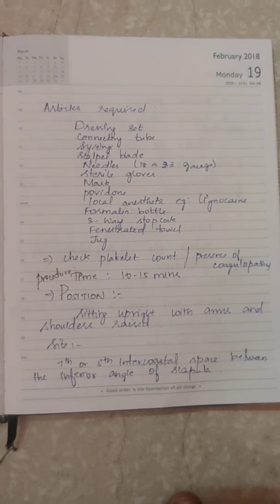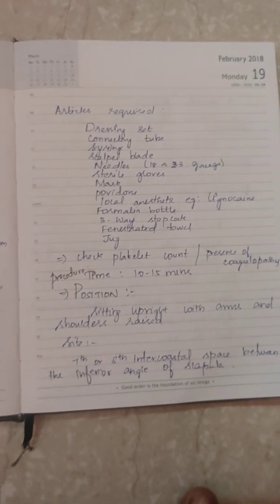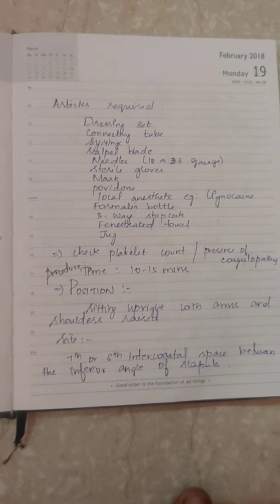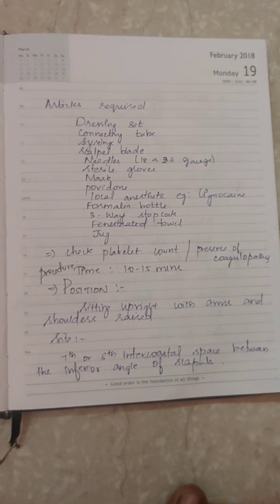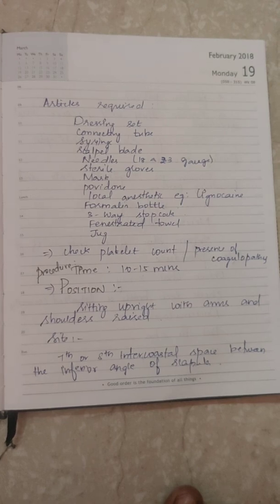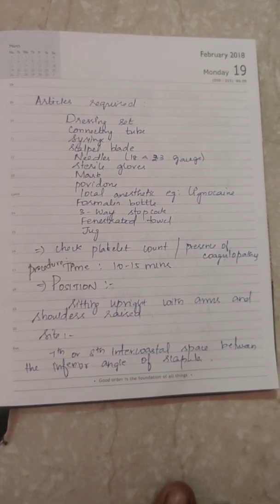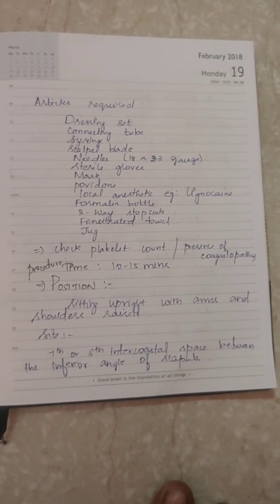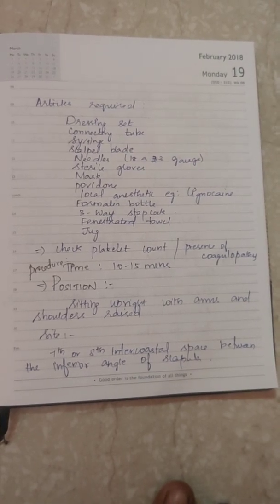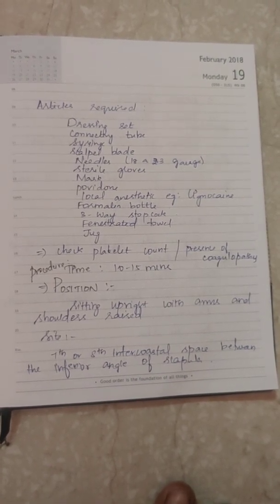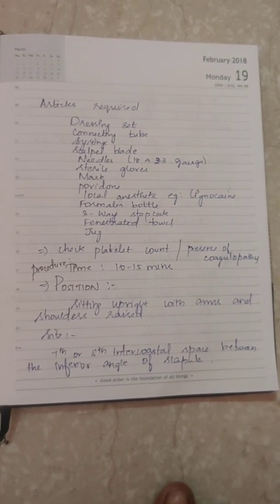Articles required for thoracentesis include: a dressing set, connecting tube, syringe, scalpel blade, needles of 18 and 23 gauge size, sterile gloves, mask, povidone-iodine, local anesthetic agent such as lignocaine, formalin bottle, three-way stopcock, fenestrated towel, and a jug.